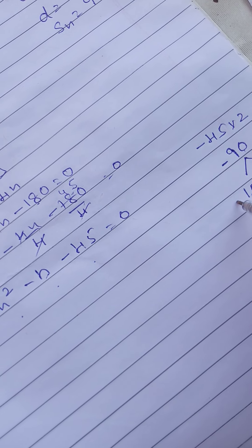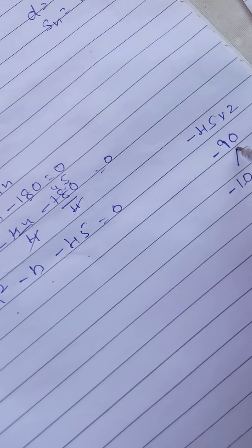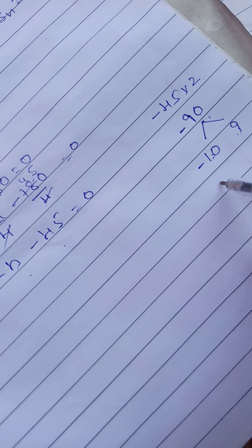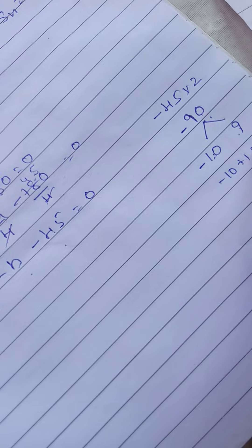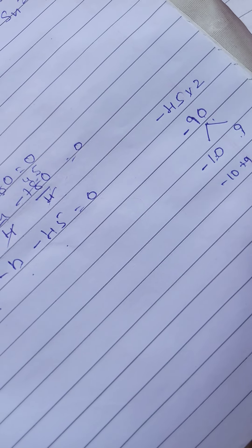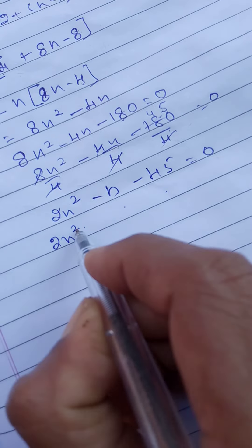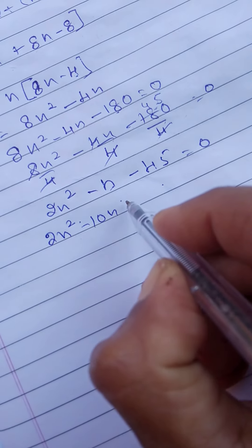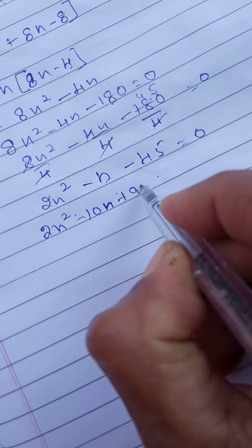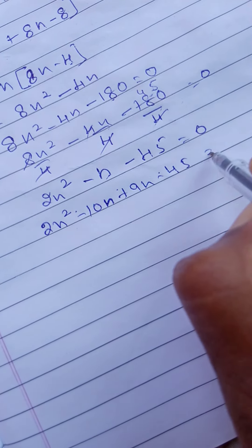10 nines are 90. Minus 10 into 9 is 90. Minus 10 plus 9 we get minus 1. So, 2n square minus 10n minus 10n plus 9n.